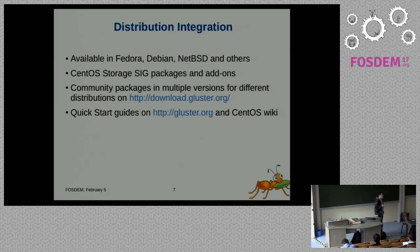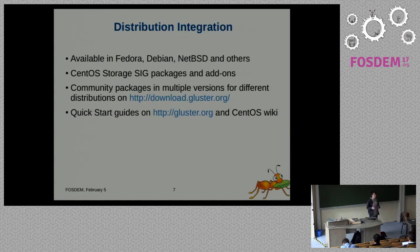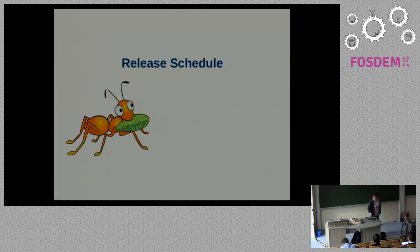All the GlusterFS packages are part of many different distributions. We try to push packages into Debian, Fedora, and we provide them for CentOS Storage SIG. There is a NetBSD contributor that pushes Gluster packages into NetBSD. There has been work with FreeBSD people to put it in the ports. We try to make it really easy for users to install GlusterFS. There are several quick-start guides through gluster.org, and some distributors offer their own wikis.